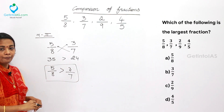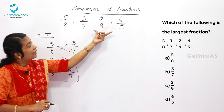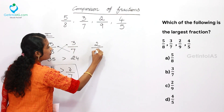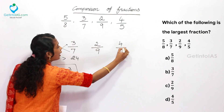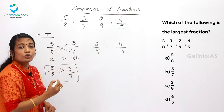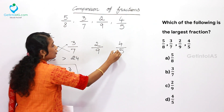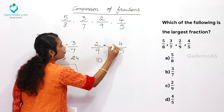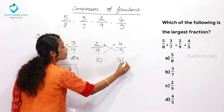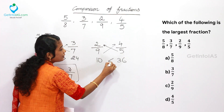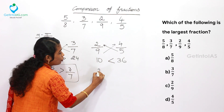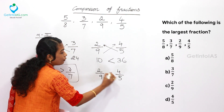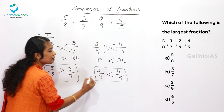Next, take the other two numbers: 2/9 and 4/5. Cross multiply: 5 into 2 is 10, and 9 into 4 is 36. Since 36 is greater, 4/5 is the greater among these two.